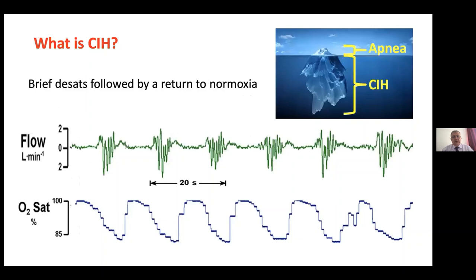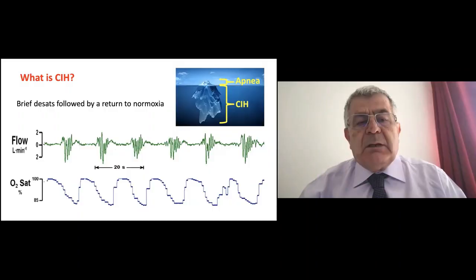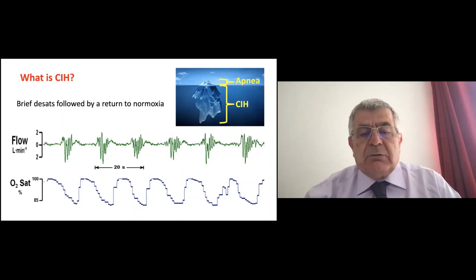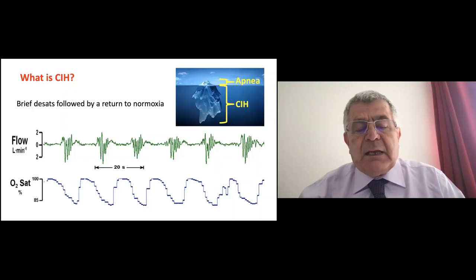When we do our rounds in the morning, we hear that a baby had six or seven desaturations throughout the day — very short desaturations with return to normoxia. That's intermittent hypoxia. When it happens over many weeks during the NICU stay, we call it chronic intermittent hypoxia. These hypoxic events don't qualify as apnea because they're not 20 seconds of cessation of breathing, or 15 seconds with bradycardia — they are just desaturations.